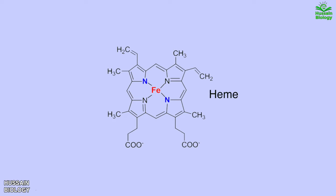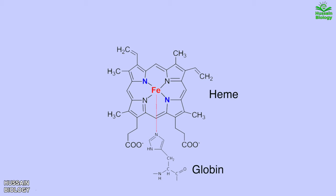In the heme molecule, the iron atom sits at the center. Four of its six coordination sites are occupied by nitrogen atoms, the fifth is occupied by the binding of the globin chain, and the last site is available to bind an oxygen molecule, as shown in the animation. This way, all six coordination sites of the iron atom are occupied.